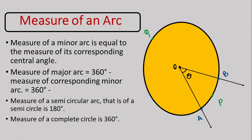Now let's see how to find the measure of an arc. Just as length is measured in meters and angles in degrees, arcs also have a measure. The measure of a minor arc is equal to the measure of its corresponding central angle. For example, arc APB is a minor arc — if the central angle theta is 30 degrees, then the measure of arc APB is also 30 degrees. If you know the value of theta, the same value is possessed by the arc.